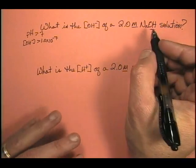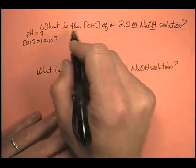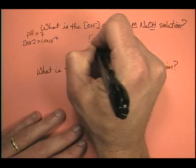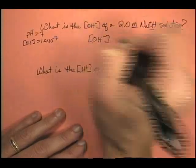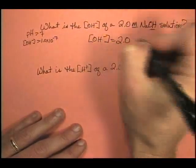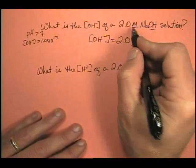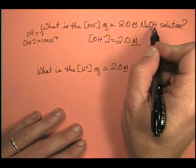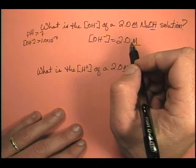So this is an easy problem. It's asking for the hydroxide ion concentration. Well, the hydroxide ion concentration of this basic solution is 2.0 molar. Because the molarity of the hydroxide ion in this case is the same as the molarity of the sodium hydroxide.